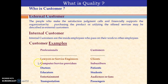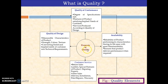Here are some examples: for lawyers and service engineers, clients are customers. For computer service providers, subscribers are customers. For doctors, patients are customers. In the field of entertainment, the audience are the customers. In the case of the transportation industry, passengers are customers. So, as per the area of application, the definitions are different. These are different examples of elements of quality: quality of design, quality of conformance, quality of availability, and quality of service.